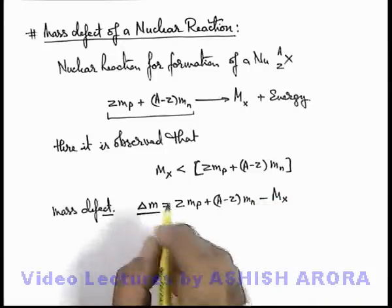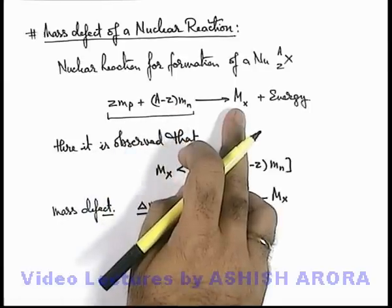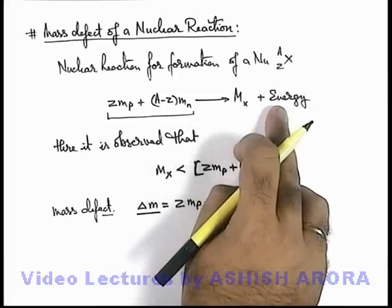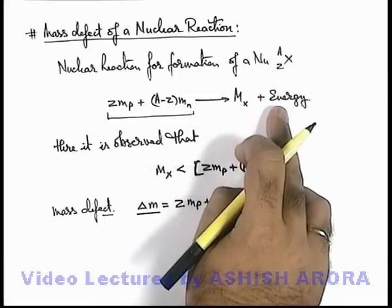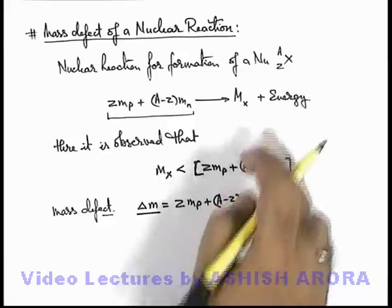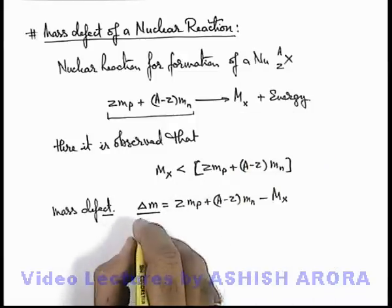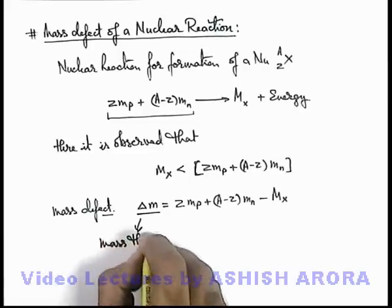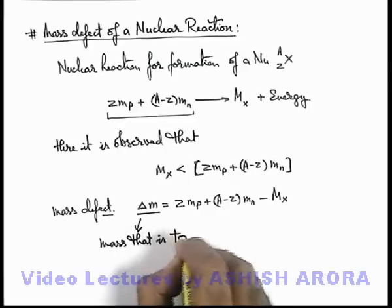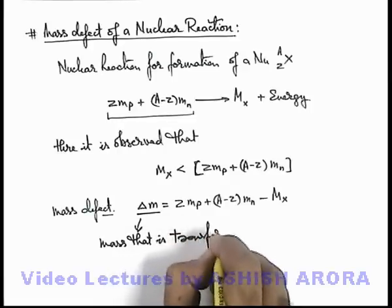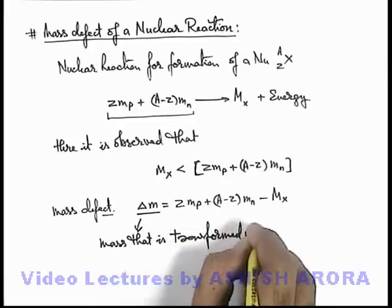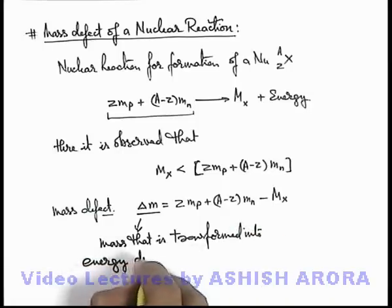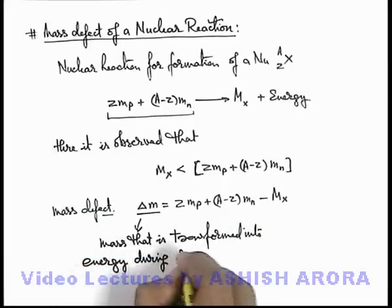Now in this situation, this is the mass which disappears in this reaction, and this is the mass which is appearing in form of energy according to the mass-energy relationship given by Albert Einstein. So we can write this is the mass that is transformed into energy during the reaction.